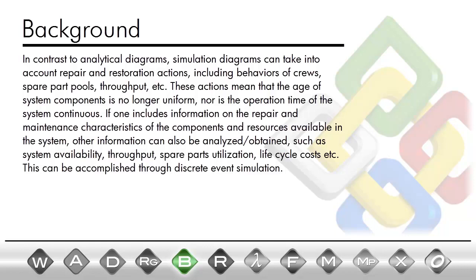Nor is the operation time of the system continuous. If one includes information on the repair and maintenance characteristics of the components and resources available in the system, other information can also be analyzed and obtained, such as system availability, throughput, spare parts utilization, life cycle costs, etc. This can be accomplished through discrete event simulation.